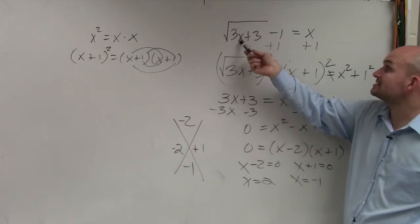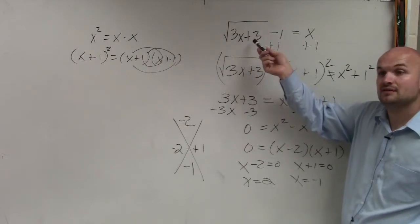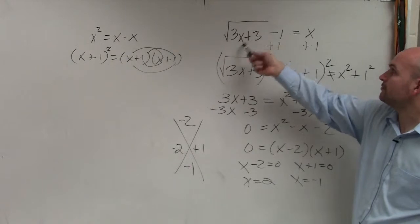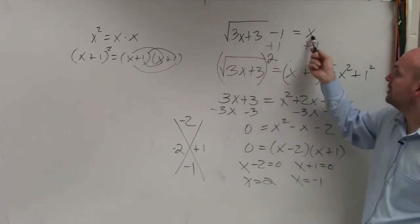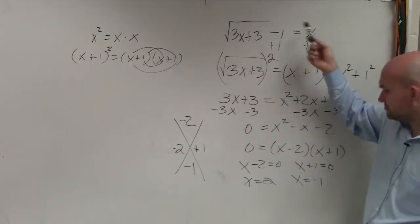3 times 2 is 6. 6 plus 3 is 9. Square root of 9 is 3. 3 minus 1 is 2. And then you'd put a 2 in for that x, right? So 2 works.